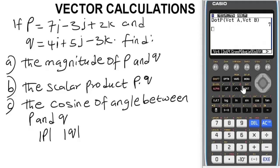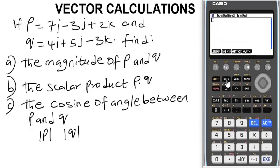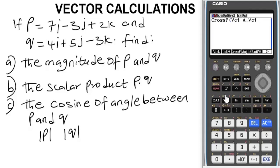If you're asked to find the cross product, delete everything and go back to Option, then the vector menu. Use F6 to navigate and look for Cross Product — press F3. For the cross product of P and Q, which is our A and B, press Alpha A, then Alpha B, close the brackets and press equals. This gives you the cross product of vectors P and Q.